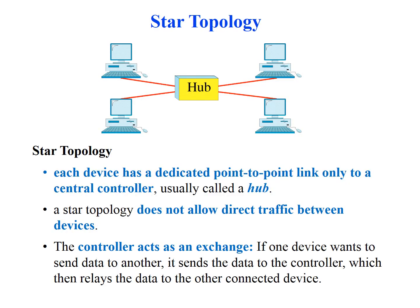Star topology is the second one. It may not visually resemble a star, which is why a topology can be either a physical or logical connection. In star topology, every device has a dedicated point-to-point connection with a hub, which is the central controller. Unlike mesh — where a device connects to all other devices — in a star, connections go only to the central hub. If any device wants to send data to another, it sends it first to the hub, which in turn forwards it to the intended device. The hub acts as an exchange in star topology.